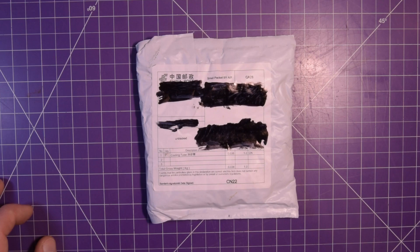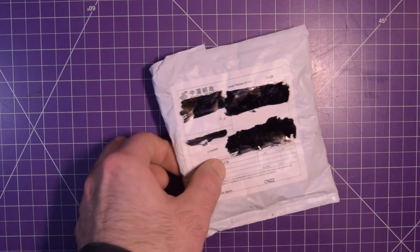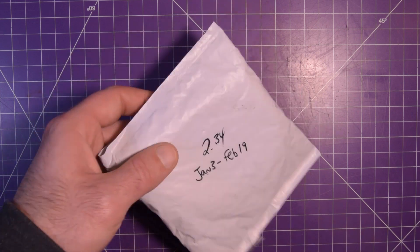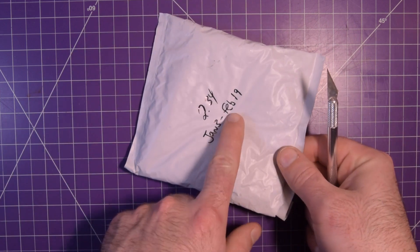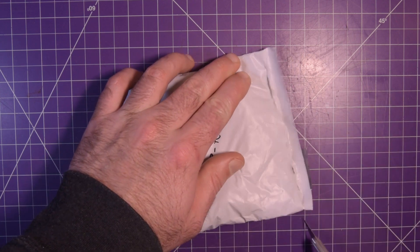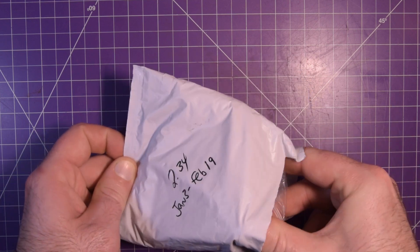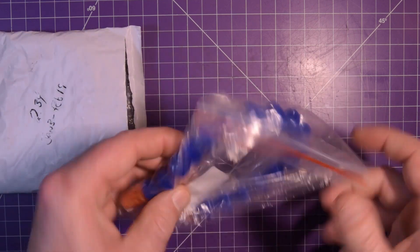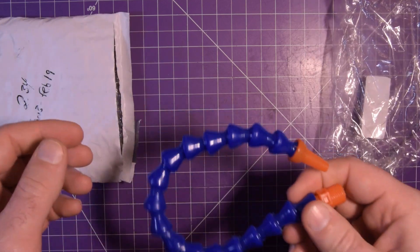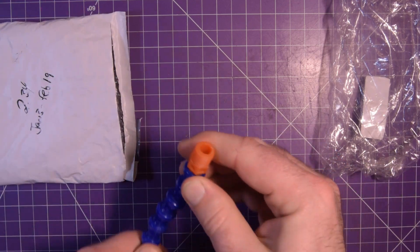Next one up is this one here. This one says quantity one cooling tube and this was $2.34, January 3rd to February 19th. So it's really like it's taking a month and a half, but there was Spring Festival. Now I don't know what's going on with the coronavirus so I really don't know how long it'll take to get stuff.